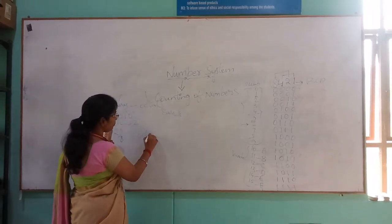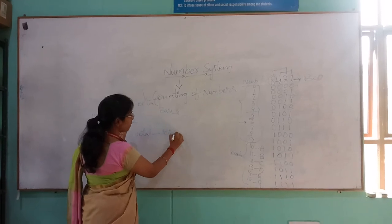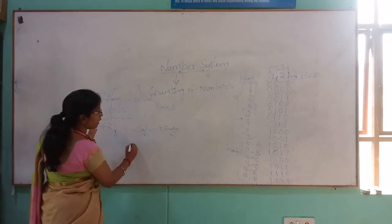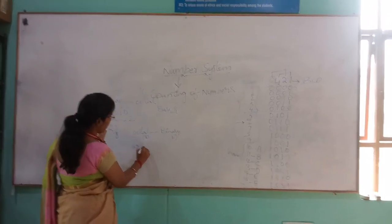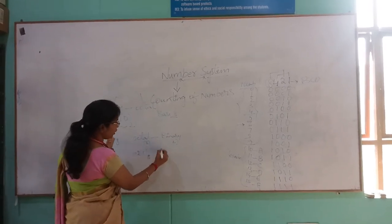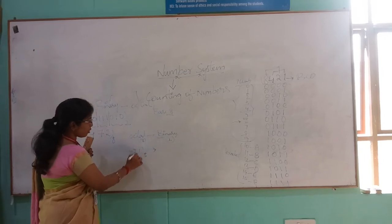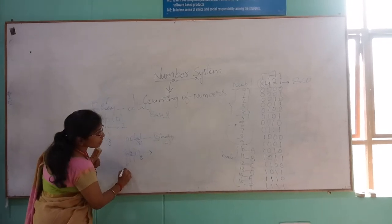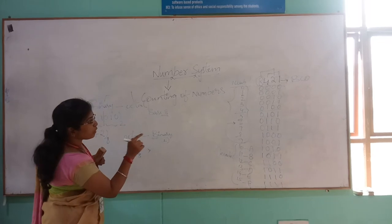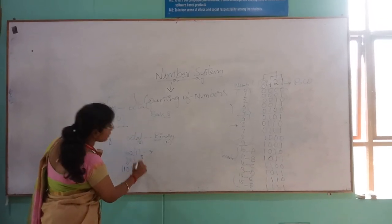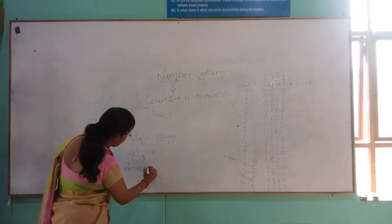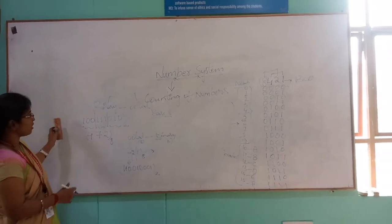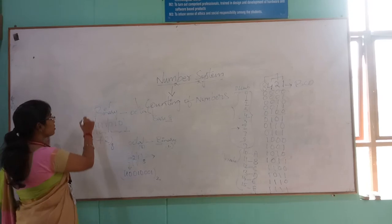In the same way, we will check for octal to binary. Here the octal is base 8, and we are converting base 8 to binary base 2. We can take any number like 6, 2, 1 — a number with base 8 — and convert it into a binary number. The binary code of 6 is 1, 1, 0. The binary code of 2 is 0, 1, 0. And 1 will be 0, 0, 1. This is the binary representation of octal to binary. So this is binary to octal and octal to binary — one conversion.